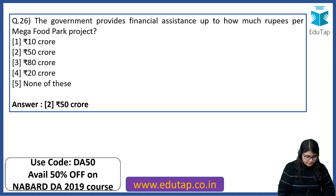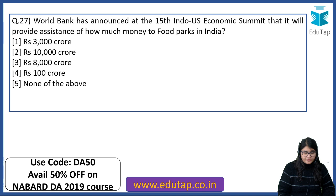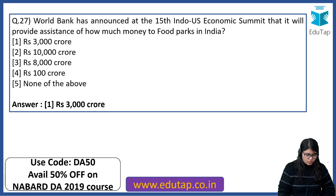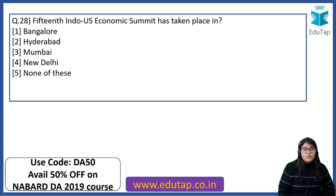The World Bank announced at the 15th Indo-US Economic Summit that it will provide assistance of how much money to food parks in India? The right answer is Rs. 3000 crore. The 15th Indo-US Economic Summit took place in which location? The right answer is New Delhi.